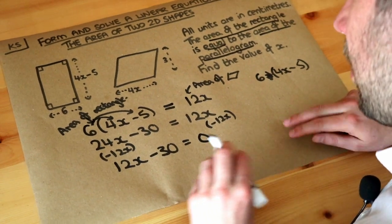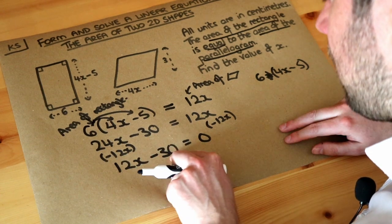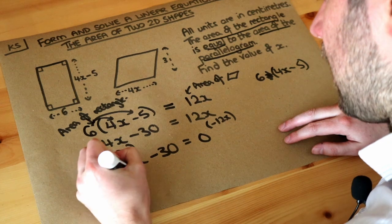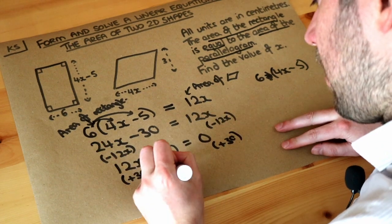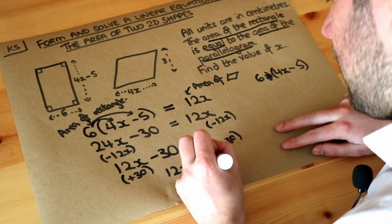And now we're on the home straight. So we want to get x on its own. It's been multiplied by 12. Then you're subtracting 30 from it. We want to get rid of that last thing, the minus 30, by adding 30 to both sides. So we get 12x. The plus 30 cancels the minus 30. And 0 plus 30 is 30.